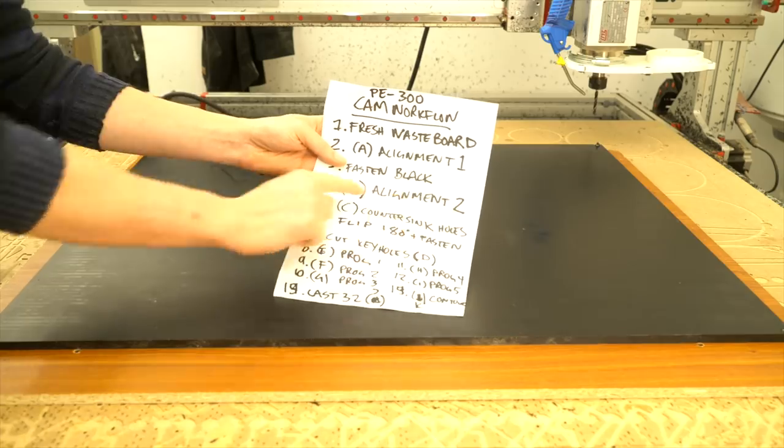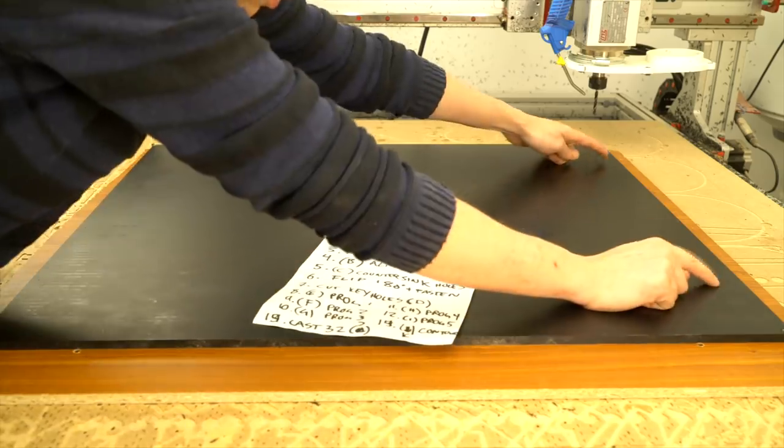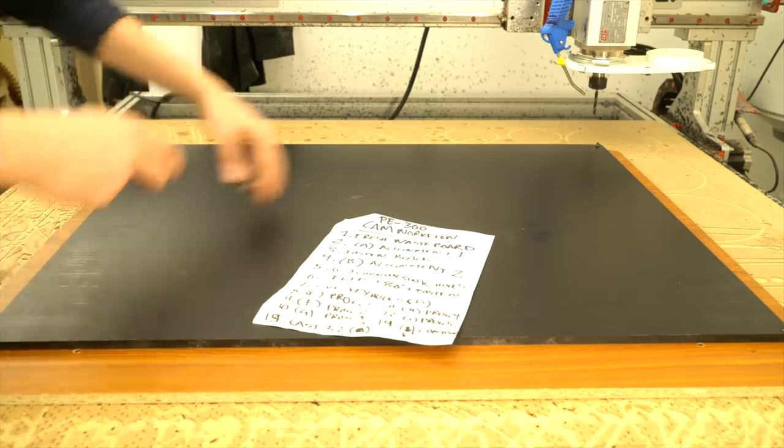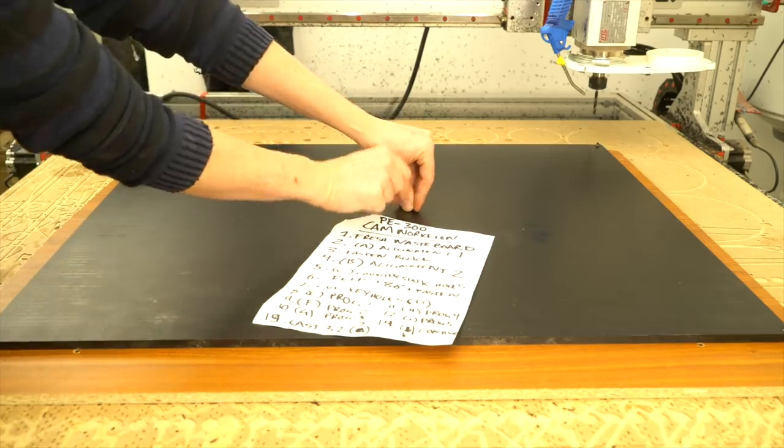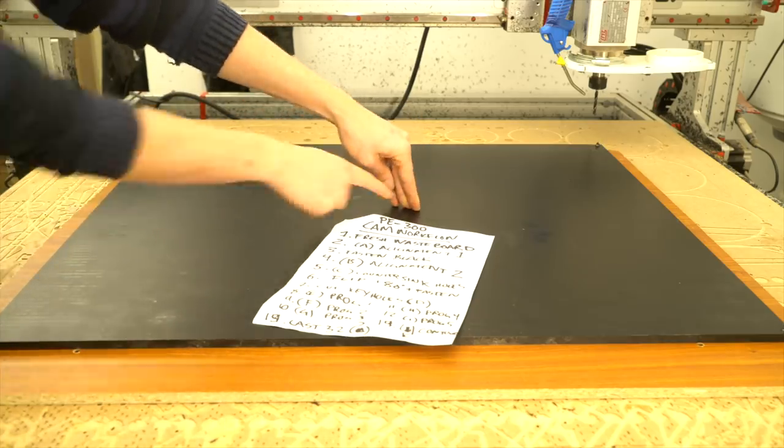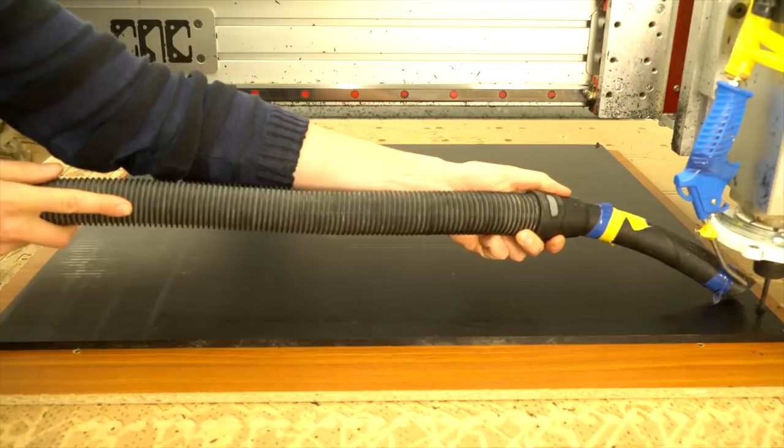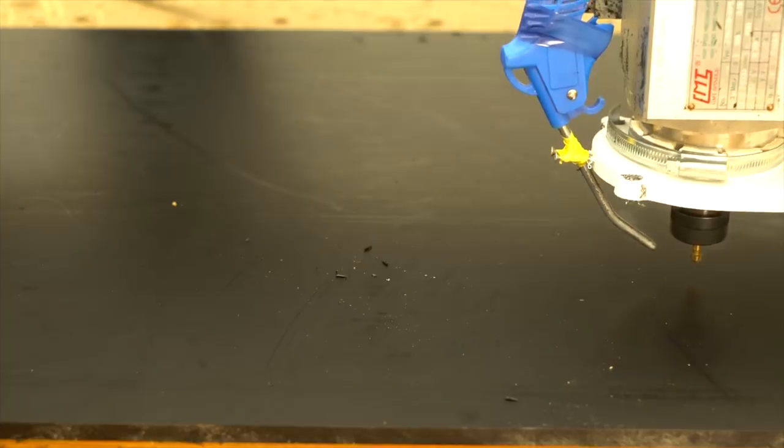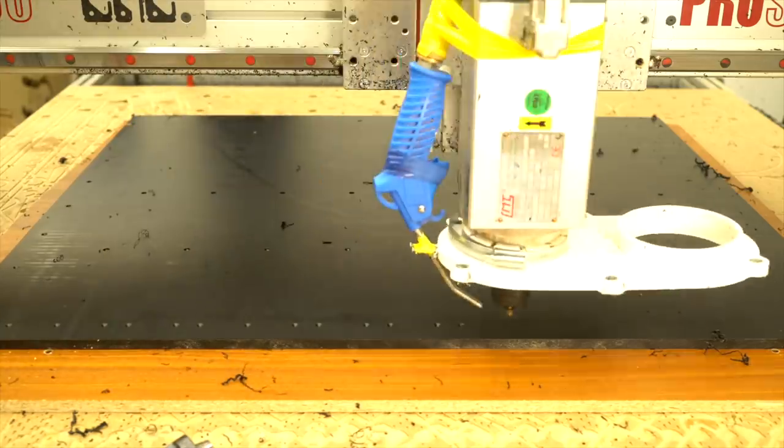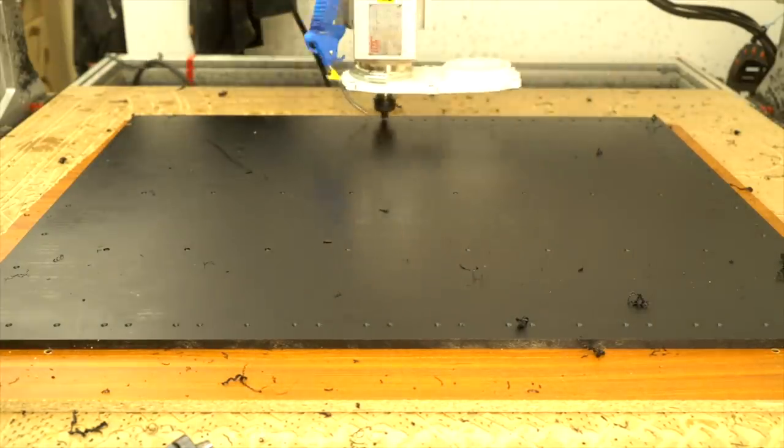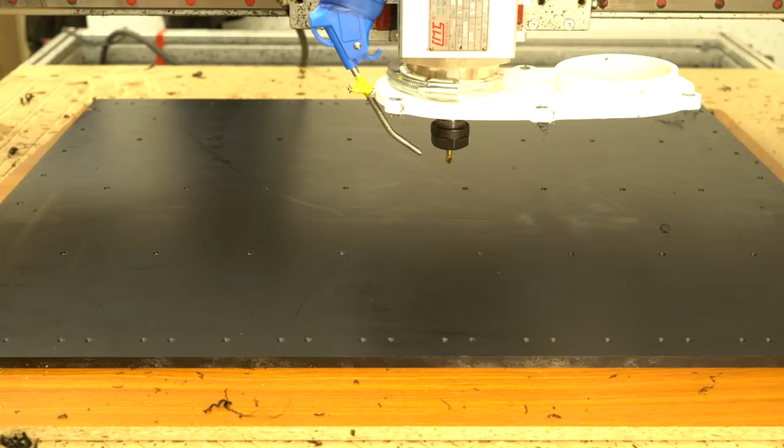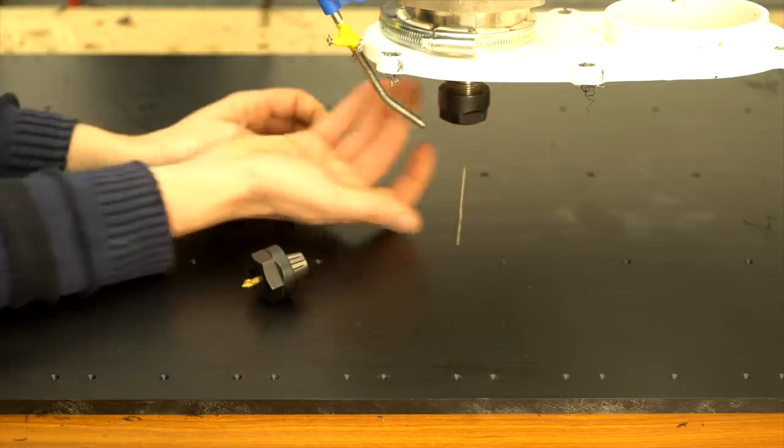Now I'm going to cut four alignment holes that are symmetrically placed, so we can flip the board later 180 degrees and maintain the same relationship to the zero point over here. Perfect.